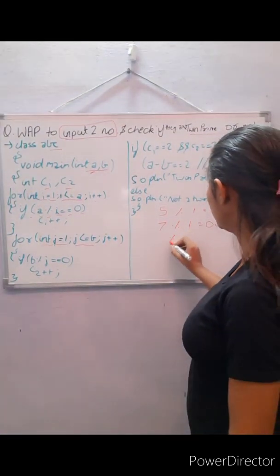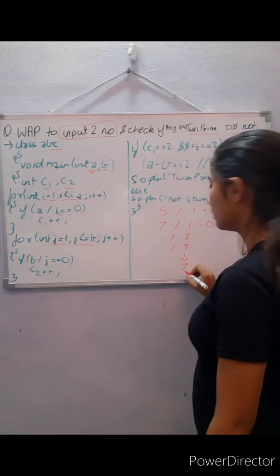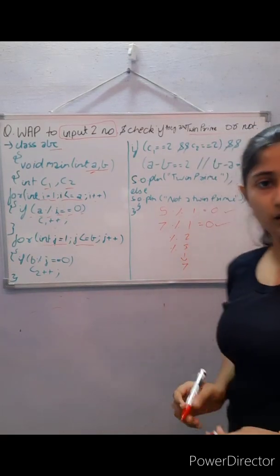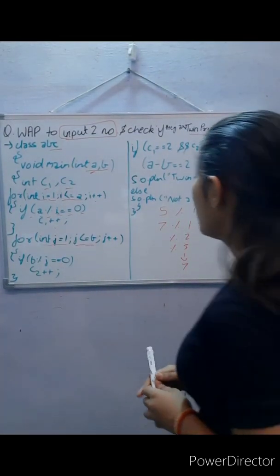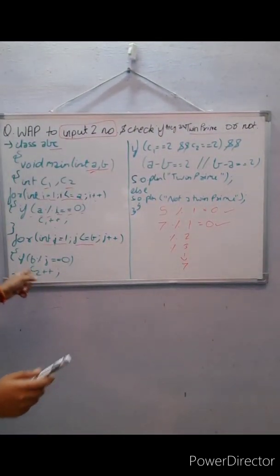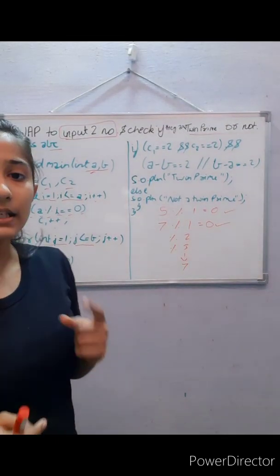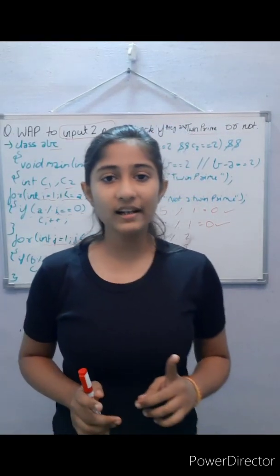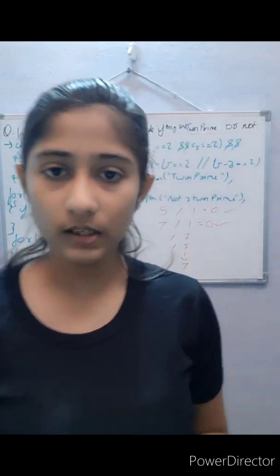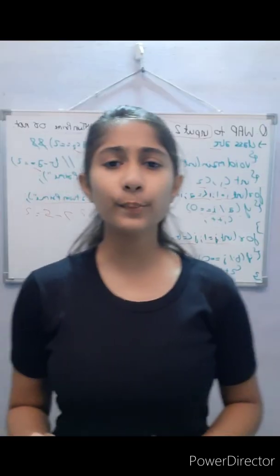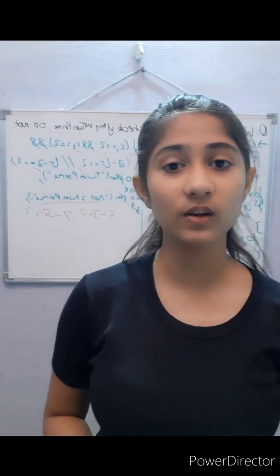Now, how do we know that these two numbers are prime? A prime number is a number which is divisible by only one and the number itself. So the counter should be two. To better understand this topic, you can also watch my previous video on checking if a single number is prime or not.